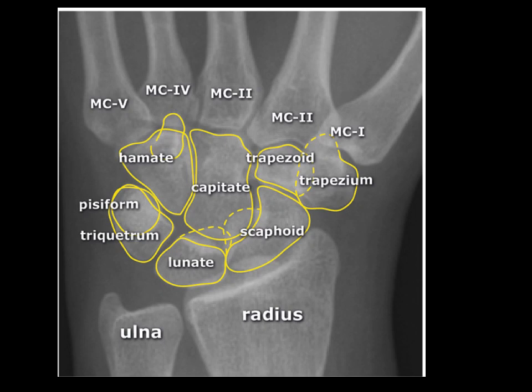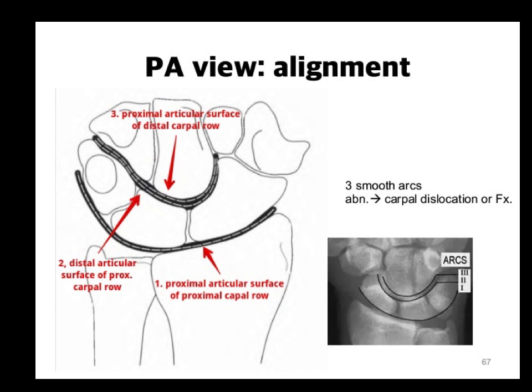Moving to the wrist, we have carpal bones articulating with each other and with the metacarpals. My approach to wrist evaluation is to look at the rows — the proximal row of carpals and the distal row — and confirm that the arcs between them are smooth. We use those arcs to identify disruption from a fracture or dislocation.